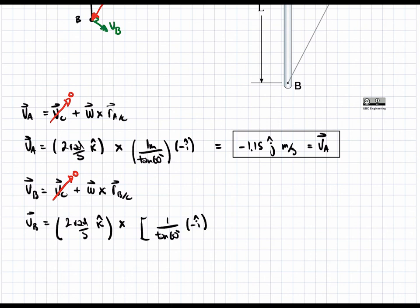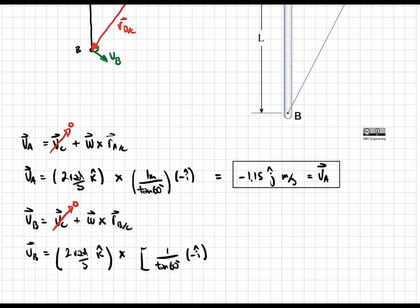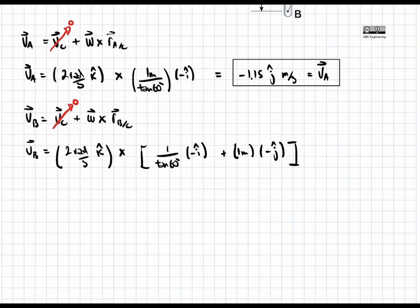But we also have a y component now. The y component is just the length. So this is the y component. And this is just the length. And again, this is going to be in the negative j direction. So we have plus one meter in the negative j hat direction. And this is our cross product. Now we can easily compute this cross product.